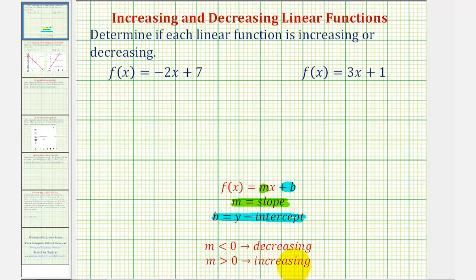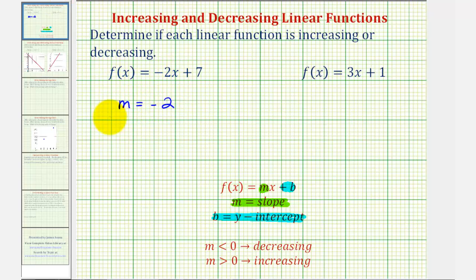We are going to look at the graphs of these two functions in just a moment, but for right now we should be able to recognize that for this first function, the slope, or m, is equal to negative two, and therefore the function is decreasing.